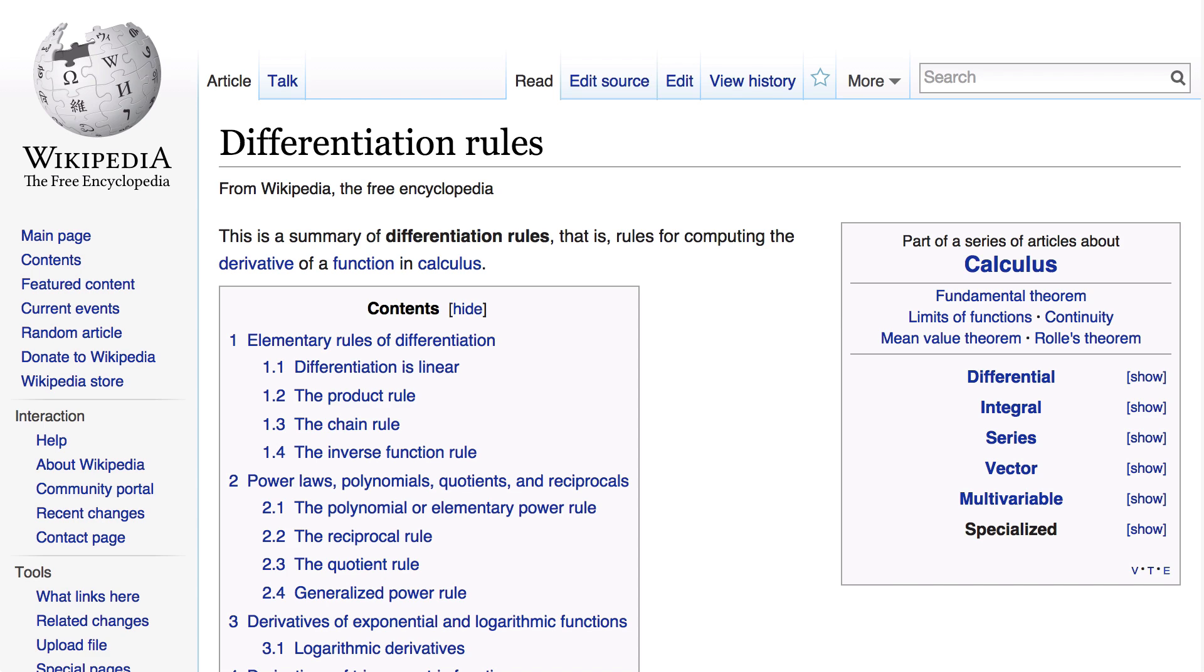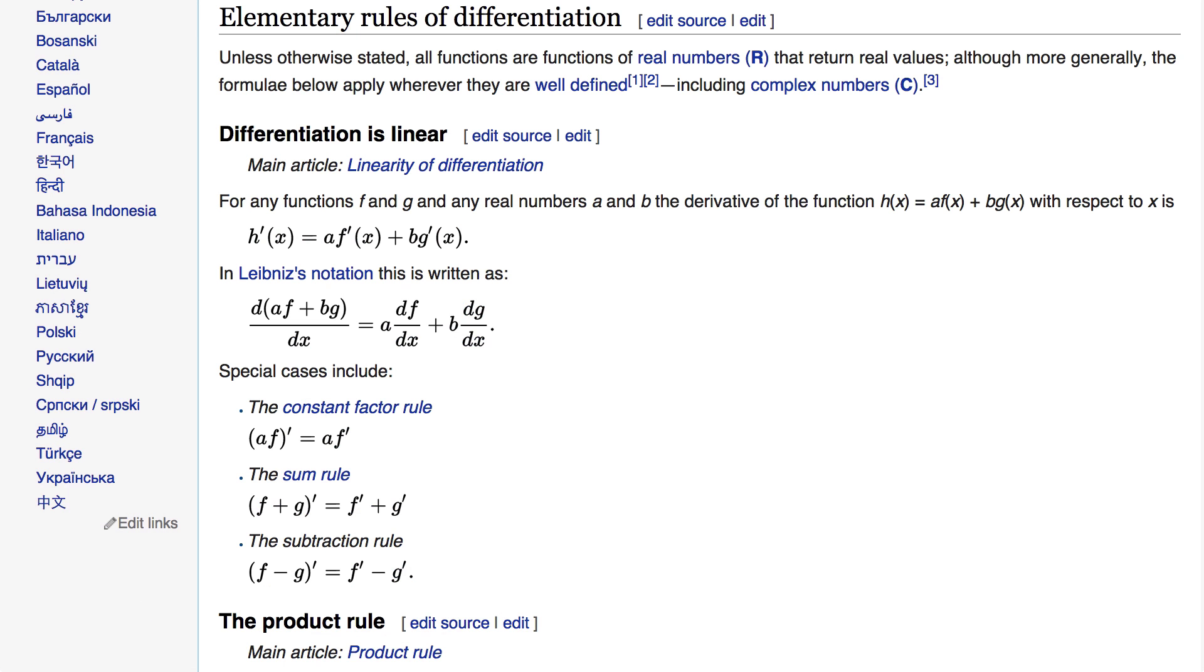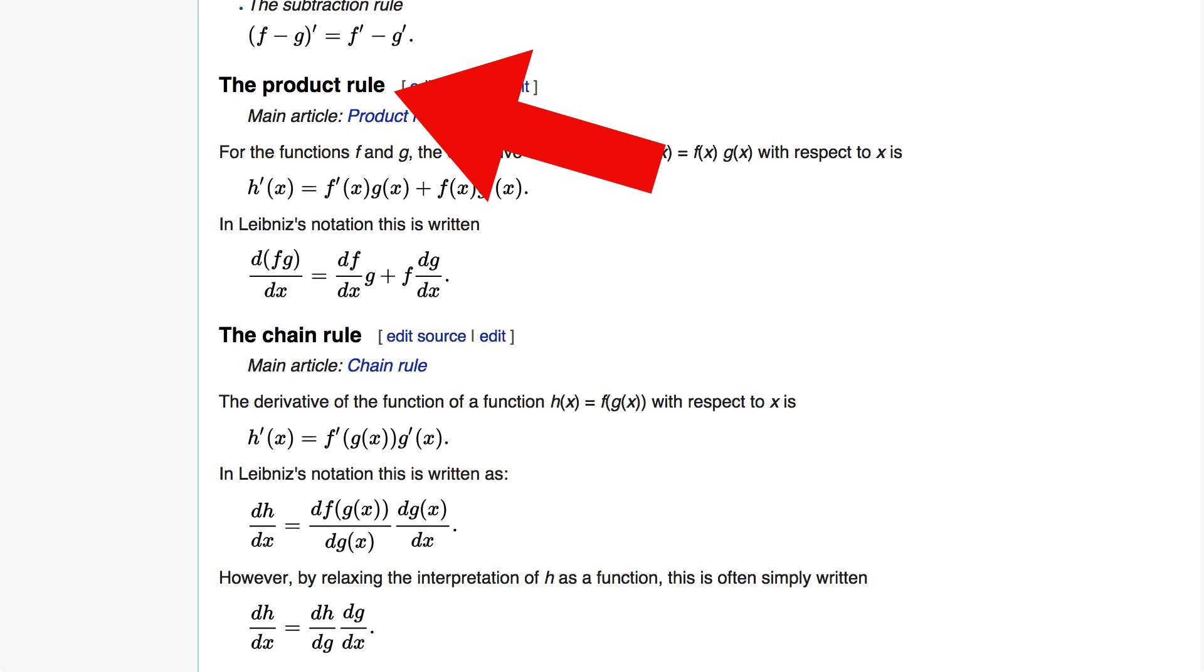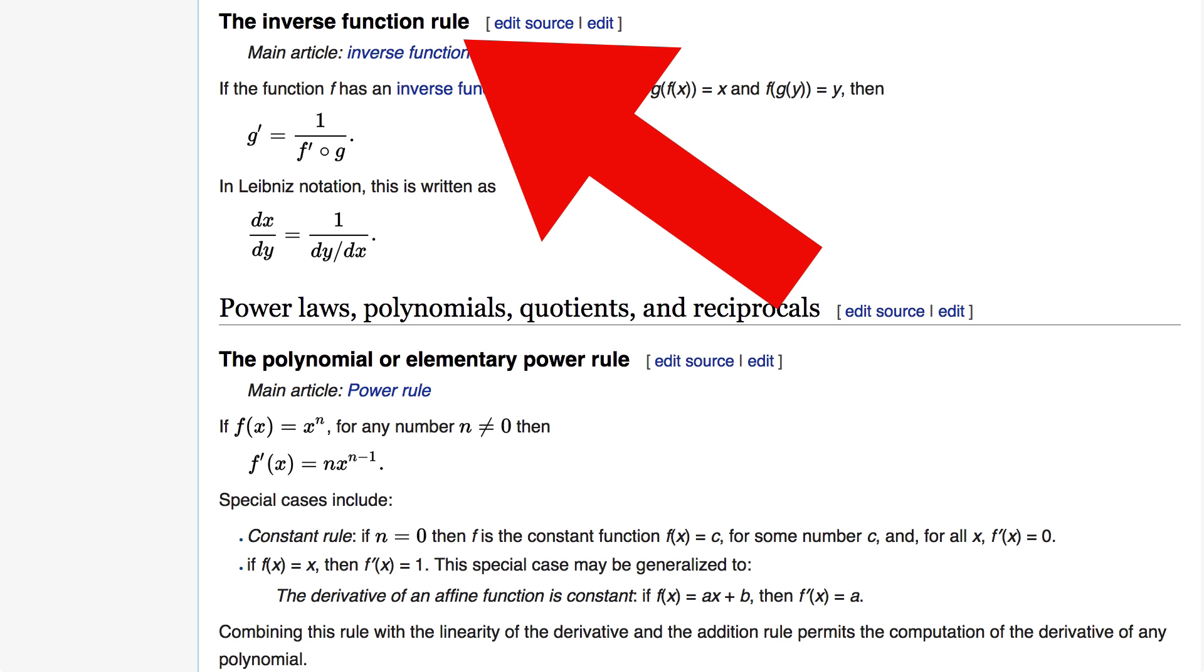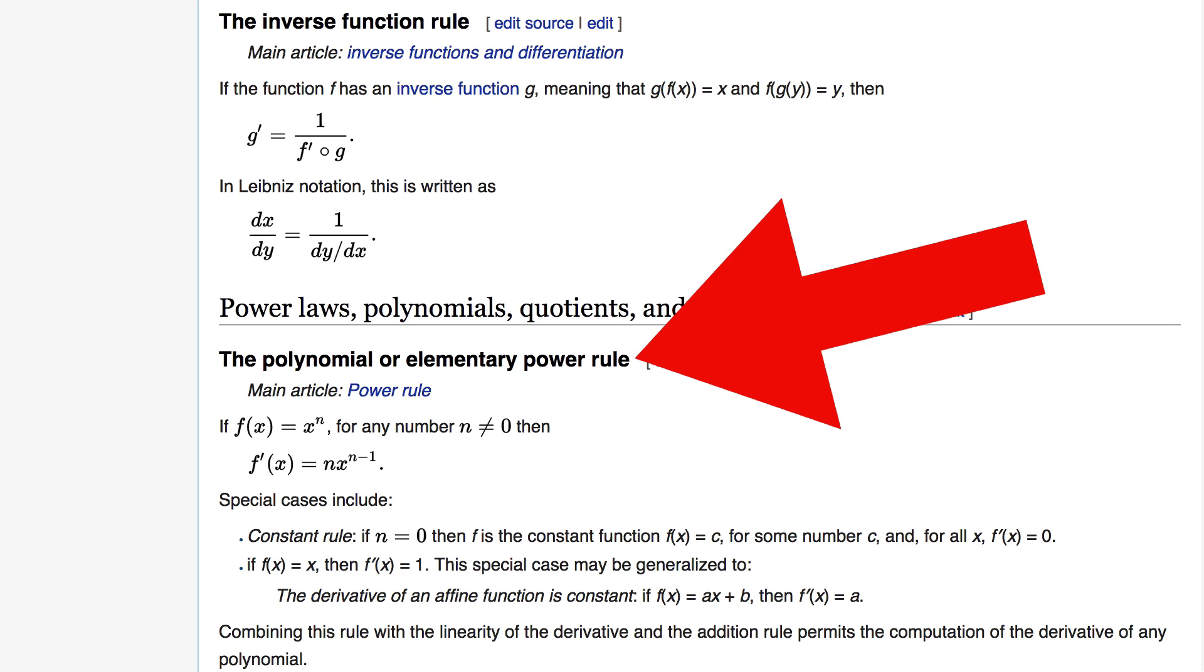If you did any calculus at school, you'll know that mathematicians have a load of rules for how to do these manipulations. There's a whole Wikipedia page full of them. There's the constant factor rule, the sum rule, the subtraction rule, the product rule, the chain rule, the inverse function rule, the elementary power rule, and so on.